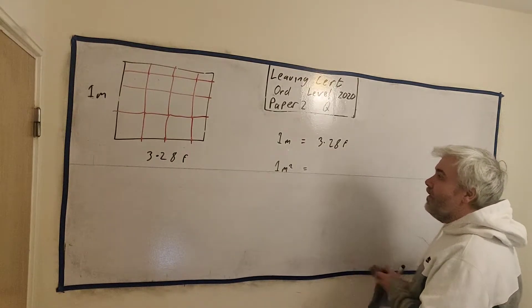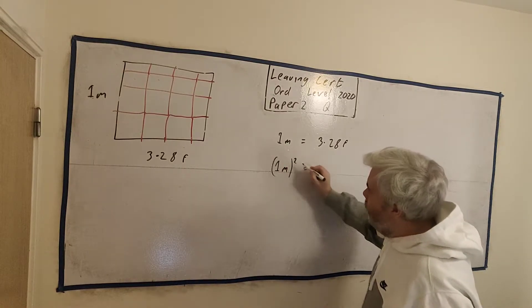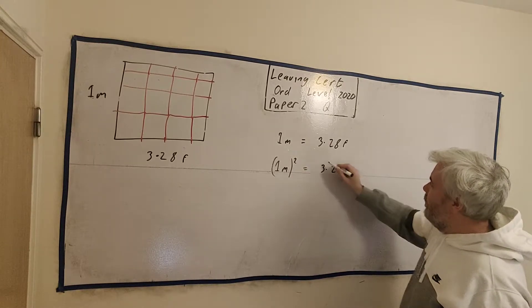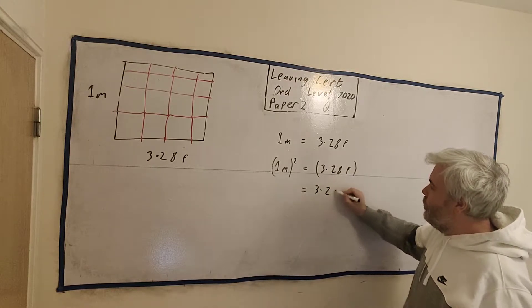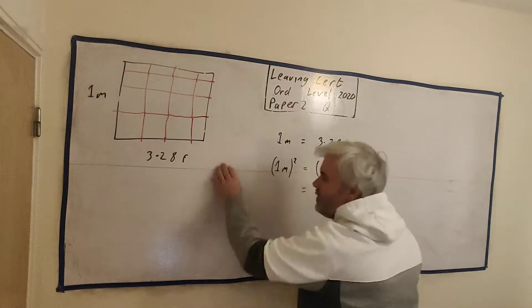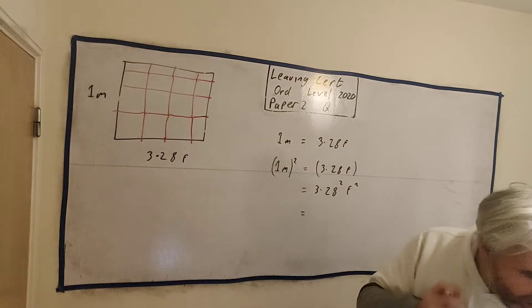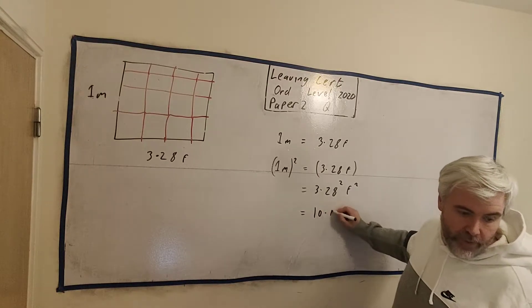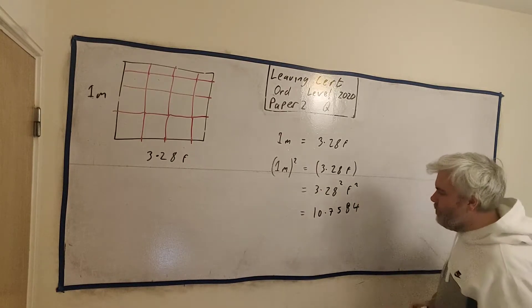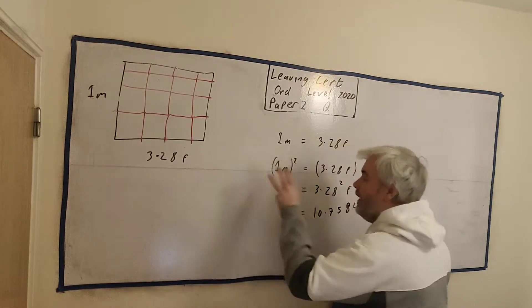It's also quite easy to see in maths. 1 metre squared is the same as 1 metre squared, is equal to 3.28 feet squared. That's the same as 3.28 squared and feet squared. 3.28 multiplied by 3.28 will get 10.7584. That's feet squared. That's the first thing. That's how we convert metre into feet.